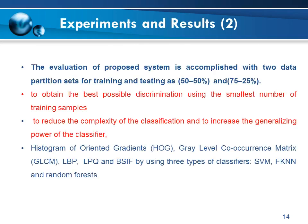The evaluation of the proposed system is accomplished with two data partition sets for training and testing: 50/50 percent and 75/25 percent. The aim of using several partition sets during the classification phase is to obtain the best possible discrimination using the smallest number of training samples, to reduce the complexity of the classification stage, and to increase the generalizing power of the classifier.